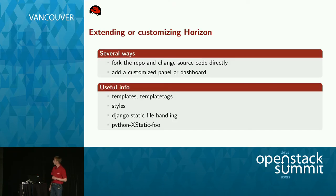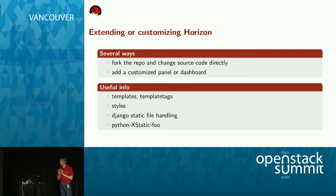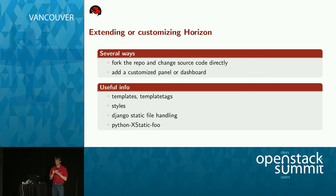Moving on to extending Horizon — there are several ways to do so. The first thing that could come to mind is to fork the repository and change the source code directly. If you're thinking about that, think twice — think three times or even more — it's a bad idea. Don't do that, because if you do, you're not able to upgrade anymore. Better would be to add a customized panel or a dashboard, and in most cases you don't even need that.